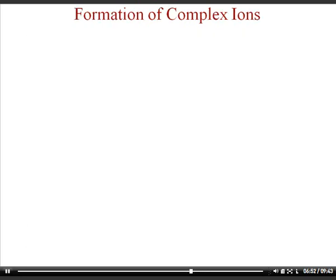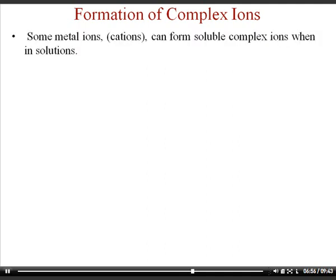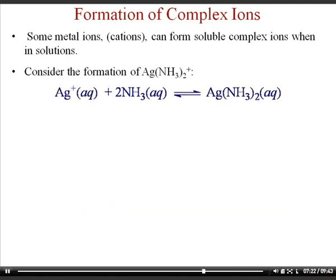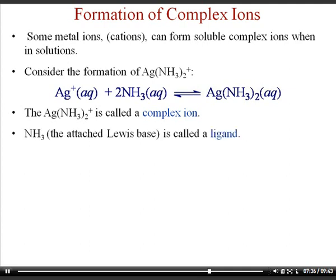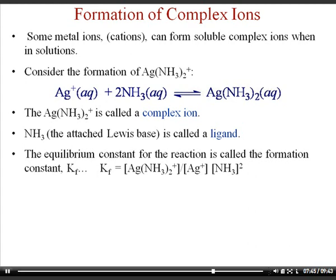Some other strange solubility effects involve complex ions, a topic that appears occasionally on AP exams. Some metal cations can form soluble complex ions in solution. For example, silver ions in solution can combine with ammonia molecules to form a silver-ammonia complex ion. A ligand — in this case ammonia — attaches to the metal ion. The equilibrium constant for this reaction is written as products over reactants raised to their stoichiometric powers and is given the symbol KF, the formation constant for that complex ion.